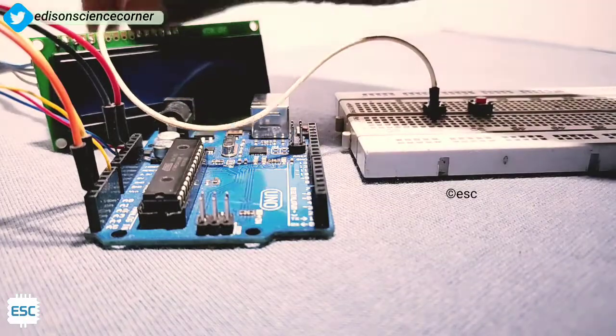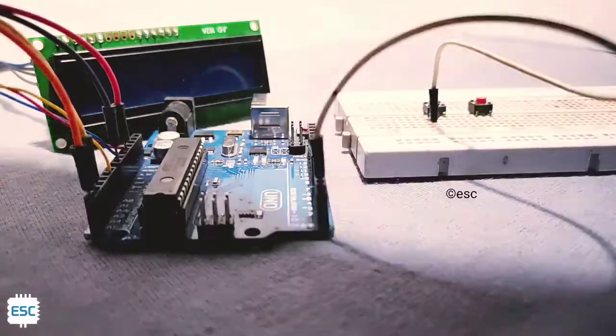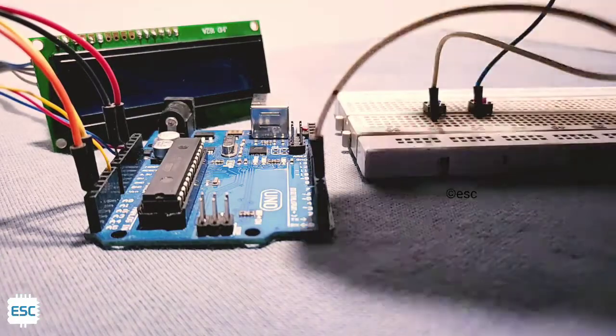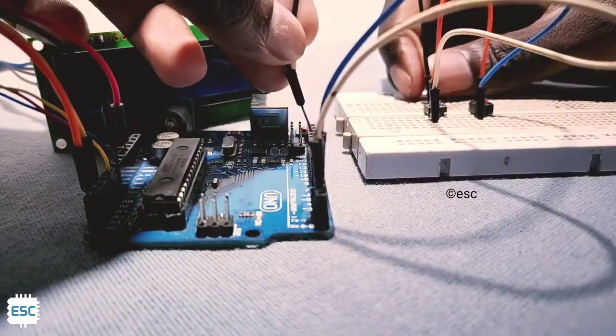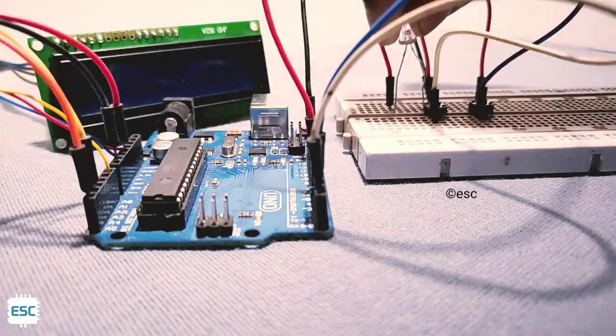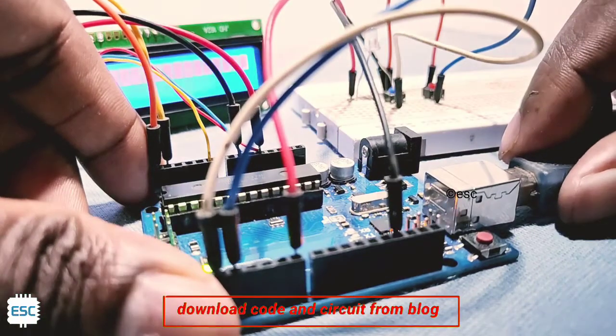After that let's connect the push buttons. Connect two push buttons to D2 and D3 and other end to GND. After that connect LED to D7. That's all about hardware setup.